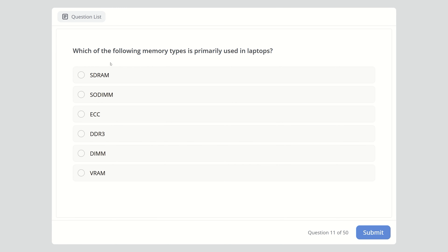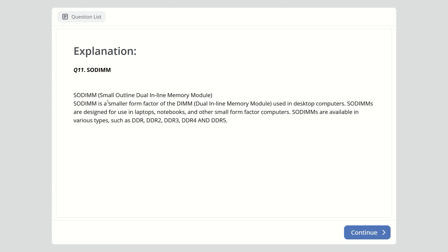Question eleven: Which memory type is primarily used in laptops? Options are SDRAM, SODIMM, ECC, DDR3, DIMM, or VRAM. The right answer is SODIMM, which stands for Small Outline Dual Inline Memory Module. It's a smaller form factor of the DIMM used in desktop computers, designed for use in laptops, notebooks, and other small form factor computers. SODIMMs are available in various types: DDR, DDR2, DDR3, DDR4, and DDR5.